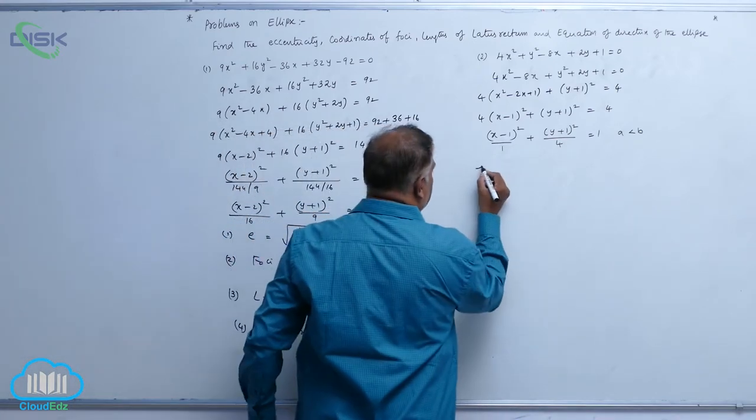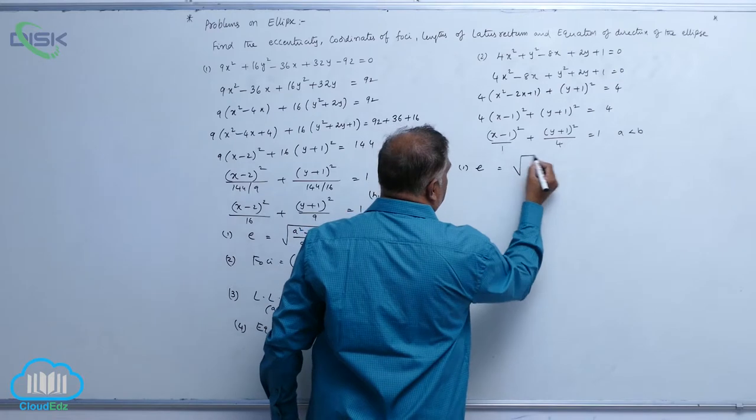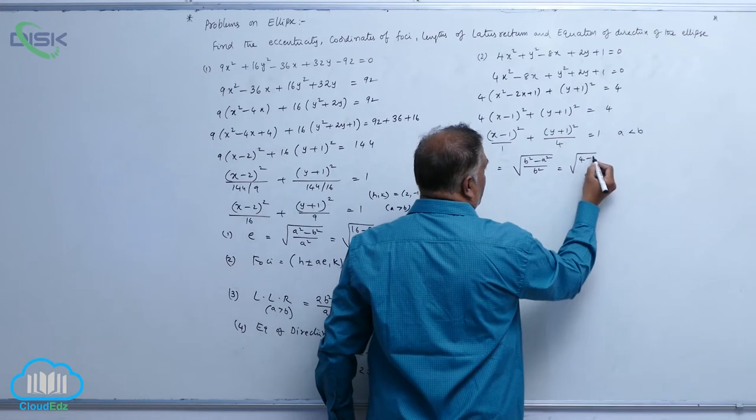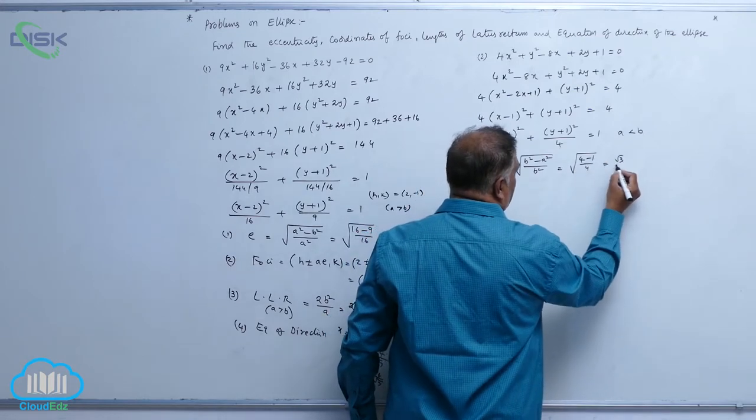Again, we will write, first eccentricity, that is, square root of b square minus a square by b square, 4 minus 1 by 4, that is root 3 by 2.